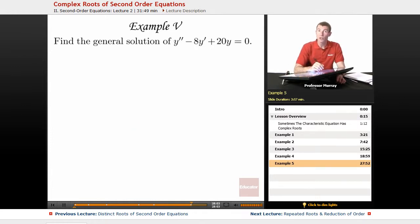So as usual, when you have constant coefficients, we're going to set up the characteristic equation, r squared minus 8r plus 20 is equal to 0.